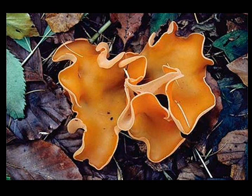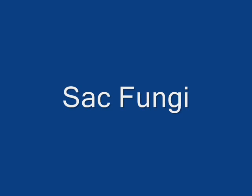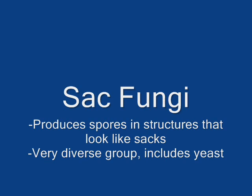The picture here is a type of sac fungi growing on a forest floor. This group contains over 30,000 diverse species of fungi. It's the largest of all the groups, and it includes the yeasts, morals, truffles, and some fungi that cause plant diseases such as Dutch elm disease. They're called sac fungi because they produce spores in structures that look like sacs.